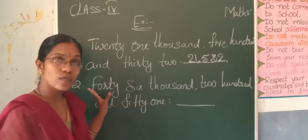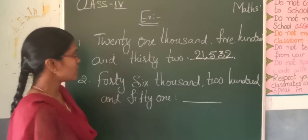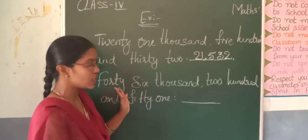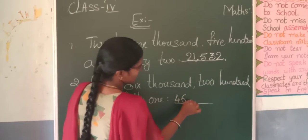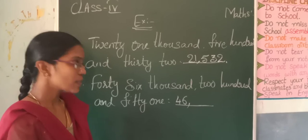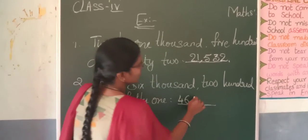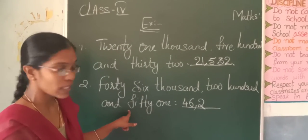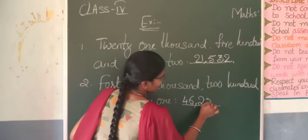46,251 — he's given for you. Now you have to write in the thousands place: 46. So right here, 46,000. Next, in the hundreds place, which number he's given for you? 200. What he's given? 200. So right here, 200 and 51. What he's given in the ones and tens place? 51. So right, 51.